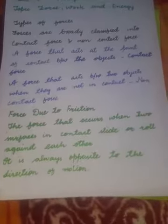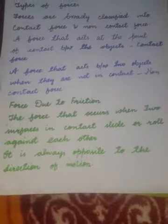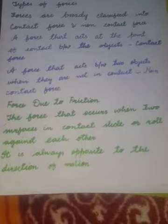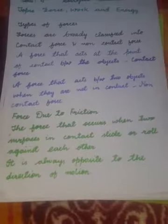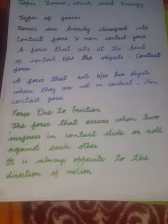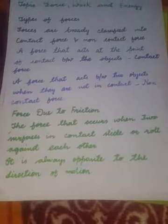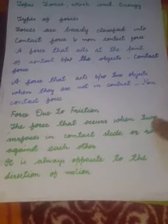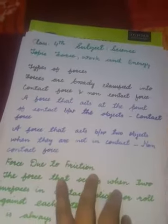First we will learn about friction. Friction is a force that occurs when two surfaces in contact slide or roll against each other. Friction is the force that occurs when two objects in contact either slide or roll against one another. For example, this paper is in contact with the book.